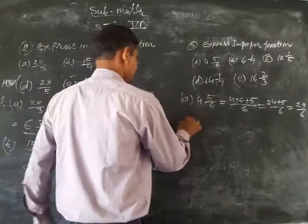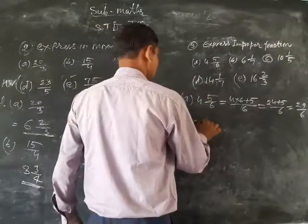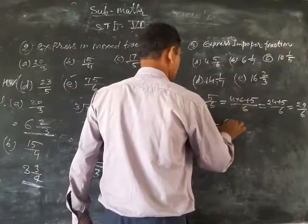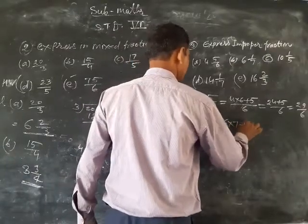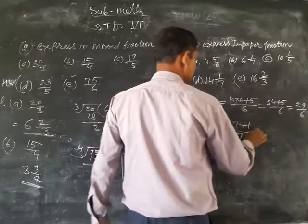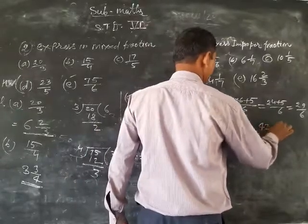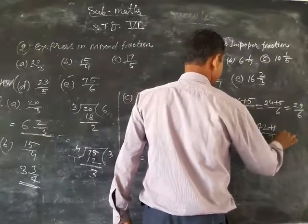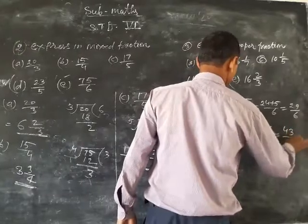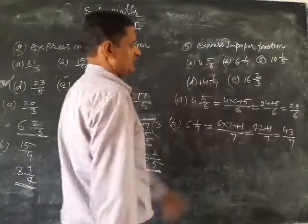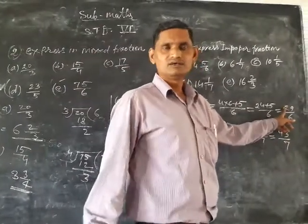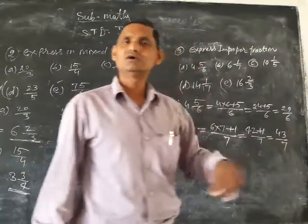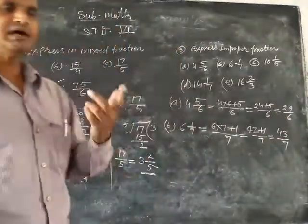Part b: 6 and 1 upon 7. So that's 6 into 7 plus 1 upon 7. 6 times 7 is 42, plus 1 upon 7, so that equals 43 upon 7. Numerator greater than denominator is called improper fraction.